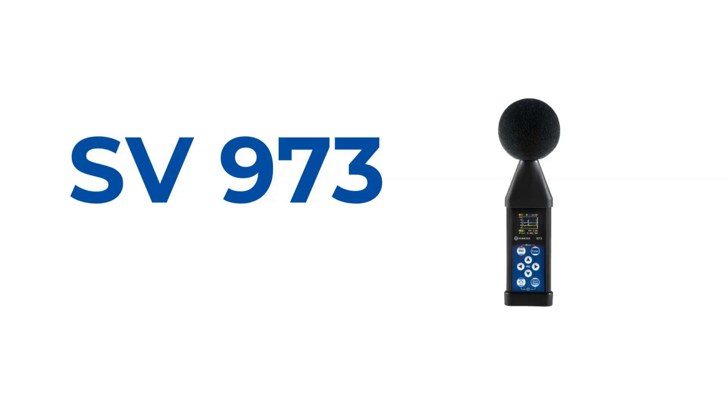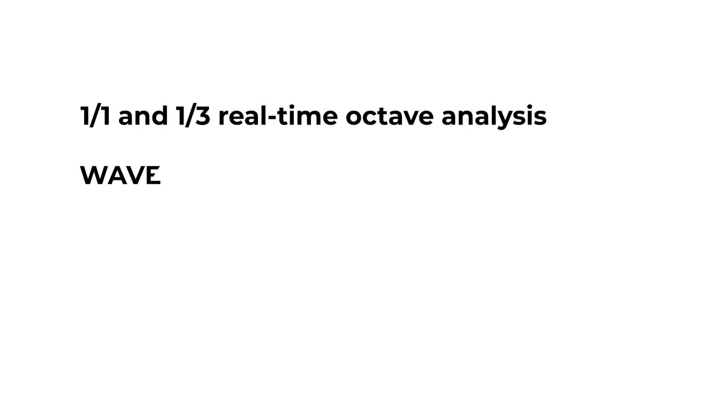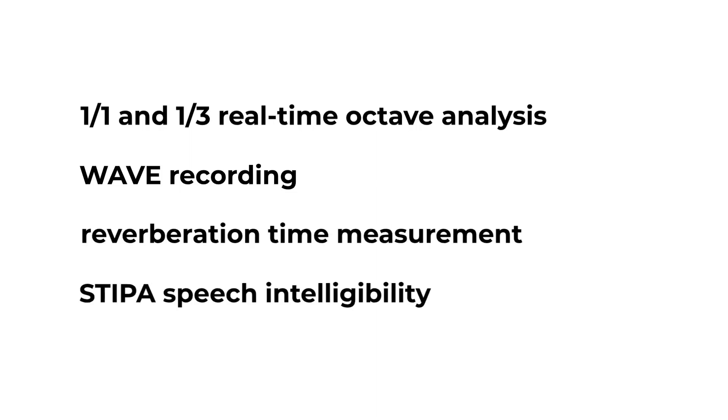The SV973 sound level meter is one of the most accurate Class II meters on the market due to its measurement abilities. Noise analyzer choices such as 1/1 and 1/3 real-time octave analysis, wave recording, reverberation time measurement, and even STIPA speech intelligibility go well above and beyond other Class II meters. The 1/1 octave analysis is often used for selection of hearing protectors. The 1/3 octave function allows you to determine the influence of high or low frequencies on overall values.